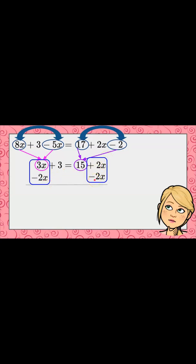This creates a zero pair on the right, and 3x subtract 2x is just x. We have our plus 3 and our 15.